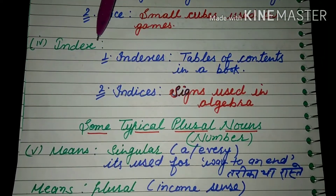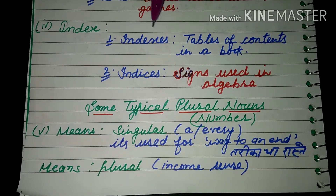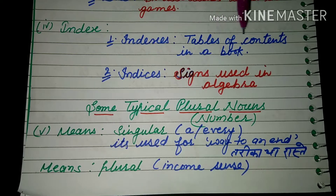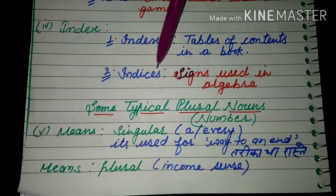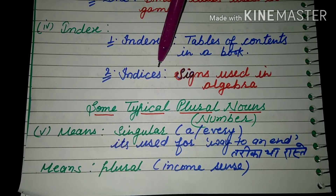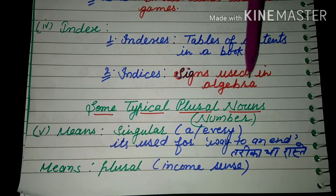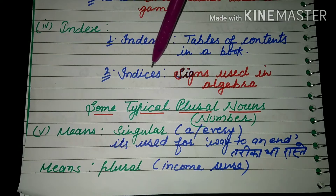Another word is 'index'. Have you heard about this word? The first plural is 'indexes', meaning tables of contents in a book — the table of contents that appears in your book, that is the index. Next is 'indices' — the plural meaning signs used in algebra. The signs used in algebra are called 'indices'.